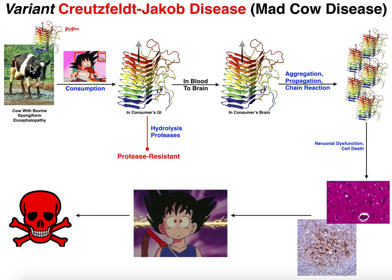Now, if you sacrifice this cow — butchered it, slaughtered it, sold the meat — and you consumed it, we're going to find something similar to Kuru. You're going to consume this cattle meat and actually consume the aggregation of the infectious prion protein. It's going to wind up in your GI tract. This aggregate of prion proteins is incredibly resistant to proteolytic hydrolysis in both the stomach and GI, so it's protease resistant and more or less survives. When it gets absorbed into the blood, it will travel to the brain, where it will continue to aggregate and propagate in a chain reaction-like fashion, resulting in a large accumulation of these protein aggregates.